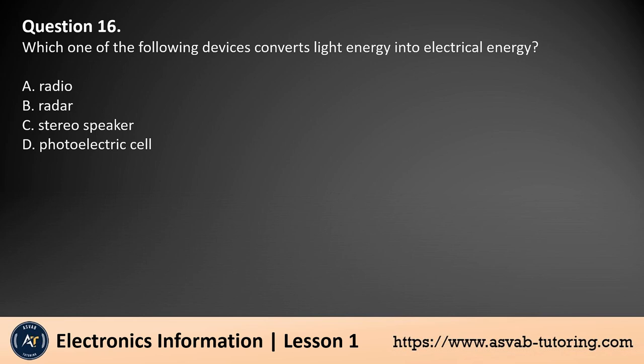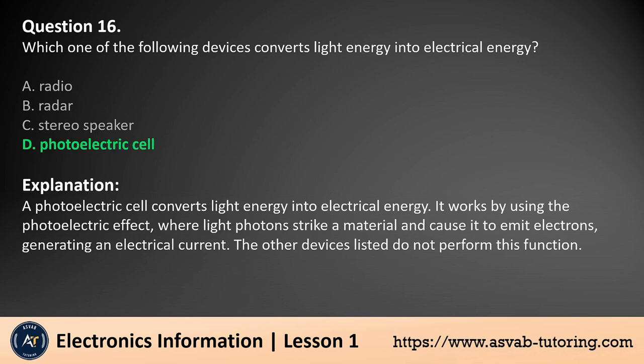Question 16. Which one of the following devices converts light energy into electrical energy? a. Radio, b. Radar, c. Stereo speaker, d. Photoelectric cell. The answer is d. A photoelectric cell converts light energy into electrical energy. It works by using the photoelectric effect, where light photons strike a material and cause it to emit electrons, generating an electrical current. The other devices listed do not perform this function.